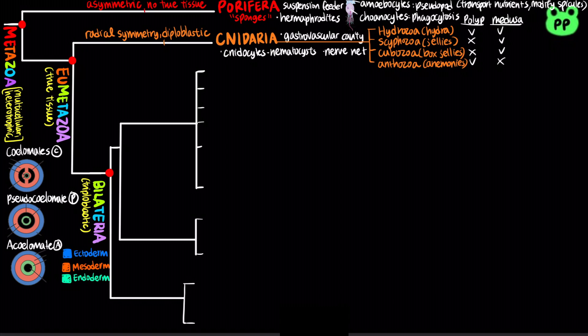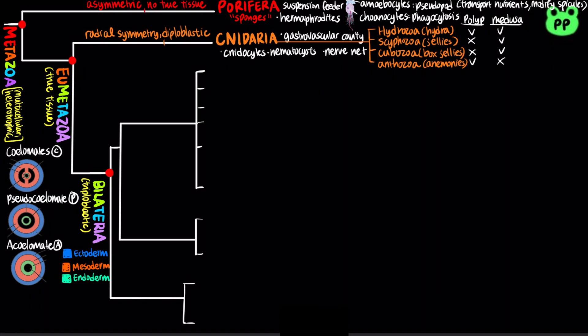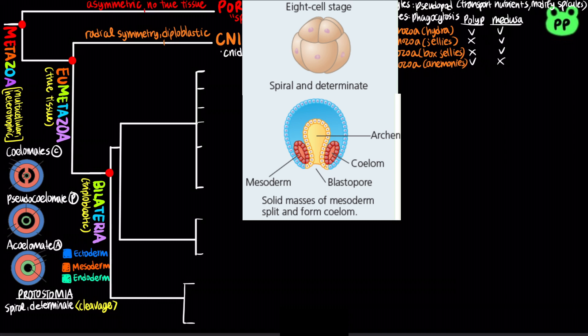Triploblastic animals can also be classified by their development. In protostome development, cleavage is spiral and determinate; solid masses of mesoderm split to form the coelom, and the mouth develops from the blastopore.